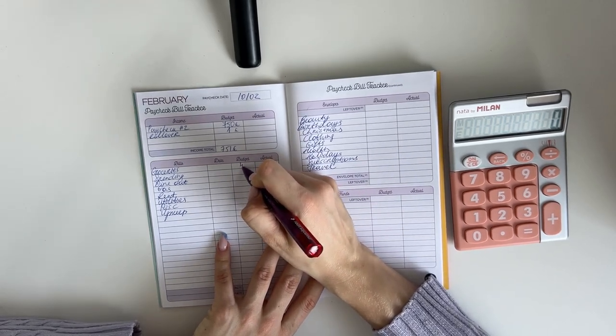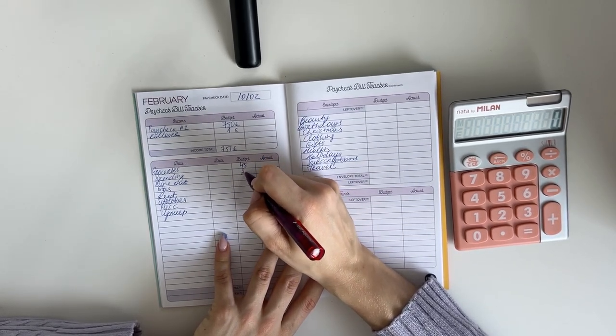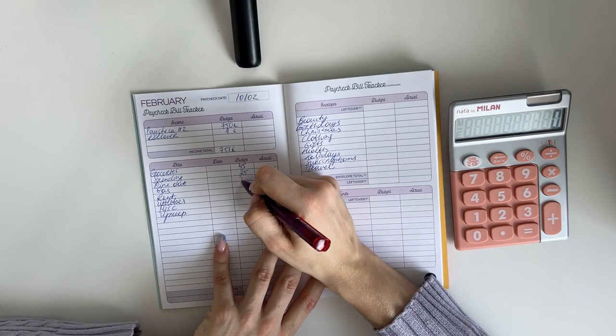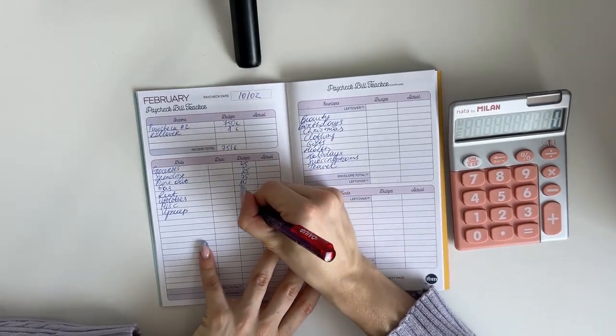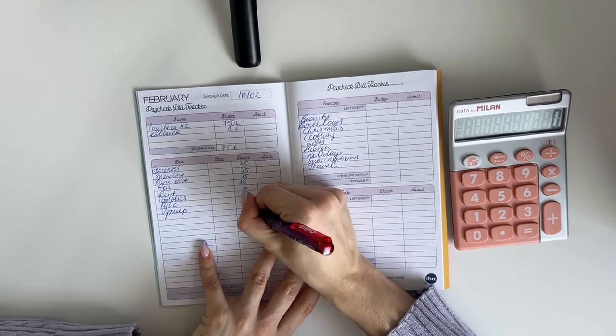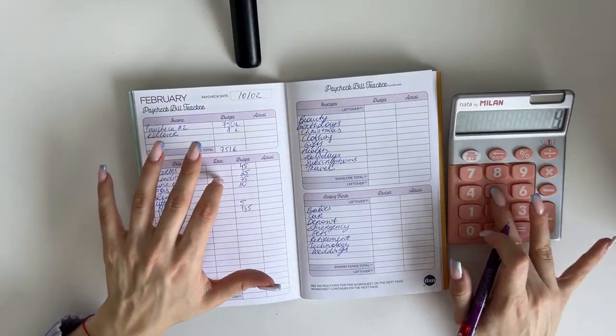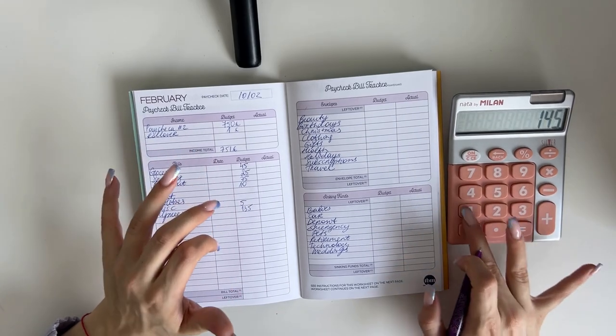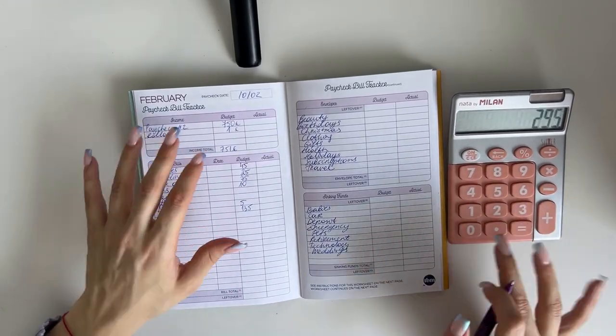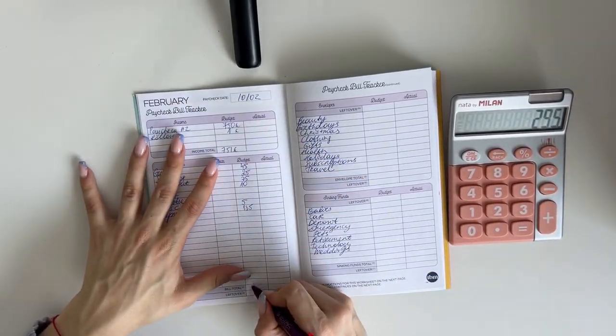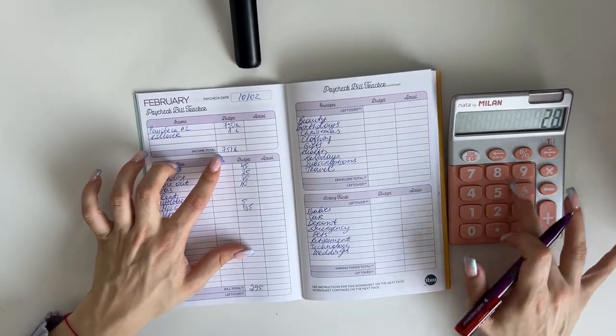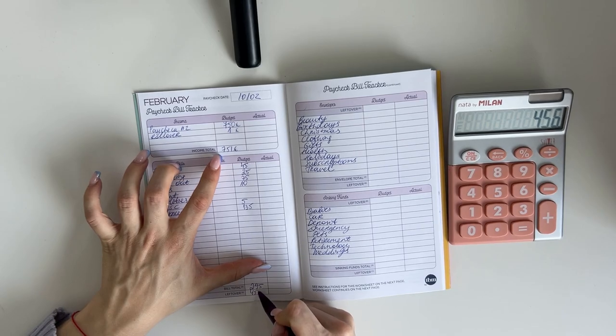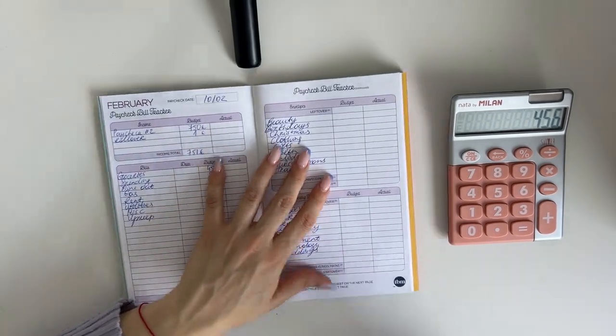Let's go. So budgeted amounts for next week. We have 45 into groceries, 25 in spending, 75 into dine out, then into gas 10, miscellaneous 5, and upkeep 135. In total it was 295. 751 minus 295 is 456. Perfect.